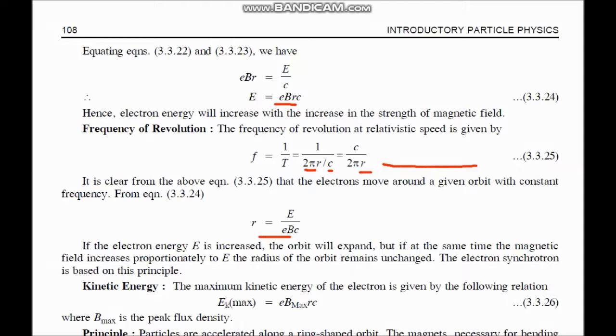Here as b increases, E also increases. As a result, E over b remains constant, so electron moves in an orbit of constant radius. By this same formula, we can also calculate what will be the maximum kinetic energy attained. Maximum kinetic energy will be attained when there is maximum magnetic field, that is peak flux density. EK equals e b max into r into c. This is the theoretical aspect, the basic principle.